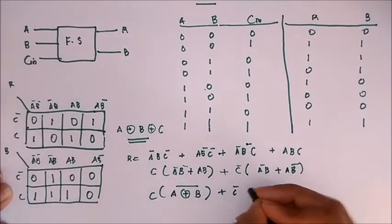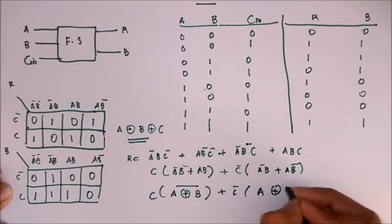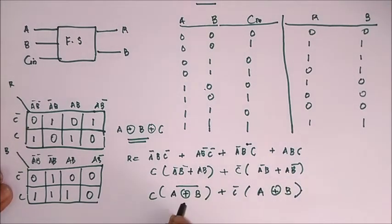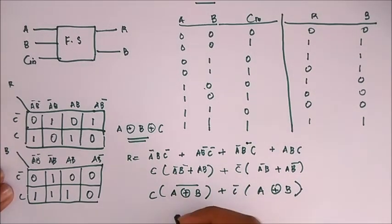So this is equal to A XOR B, the whole thing, XOR C. Now for obtaining the borrow, we can make it into three pairs like this.